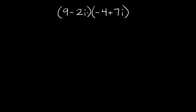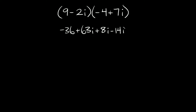This one is, in parentheses, 9 minus 2i times, in parentheses, negative 4 plus 7i. So what we have to do here is FOIL — we have a binomial times a binomial. So the first terms are 9 times negative 4, that's negative 36. And then 9 times 7i is positive 63i. And then negative 2i times negative 4 is positive 8i. And then negative 2i times positive 7i is negative 14i squared.